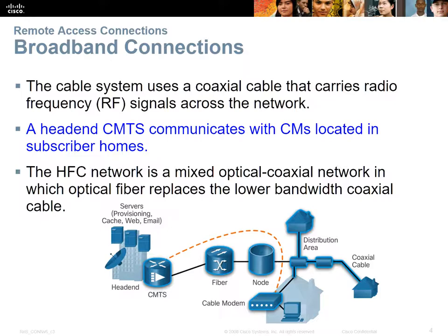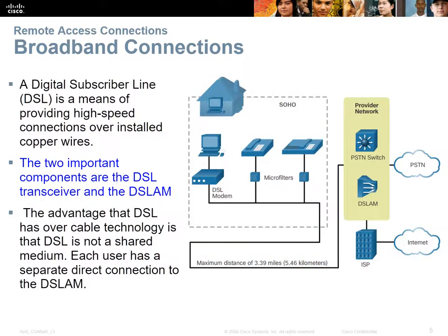Starting with cable connections: you've got your head end with pay TV, email, and internet, then your cable modem termination services running fiber optics out to telegraph poles in the street. They branch off into coaxial cable spanning out in all directions for a couple hundred meters, and then each household taps off that coaxial cable to form a PPPoE connection back to the termination point. HFC — hybrid fiber coaxial — is the acronym for this architecture.